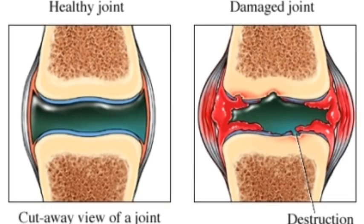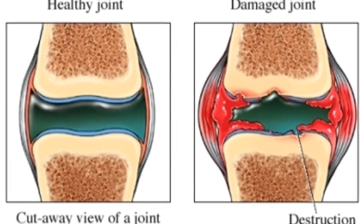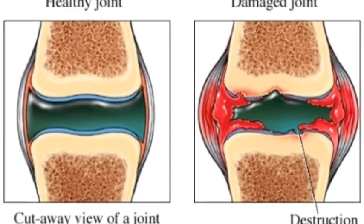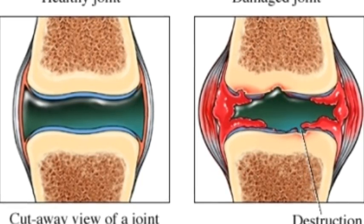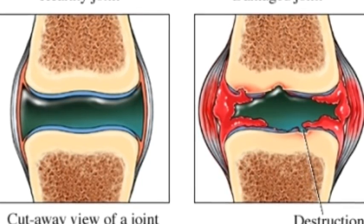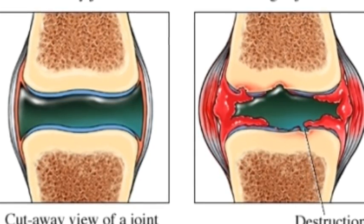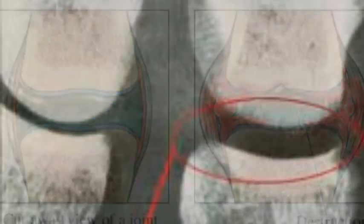Bubbles forming in or near joints are the presumed cause of the joint pain of a classical bend. When high levels of bubbles occur, complex reactions can take place in the body, usually in the spinal cord or brain.